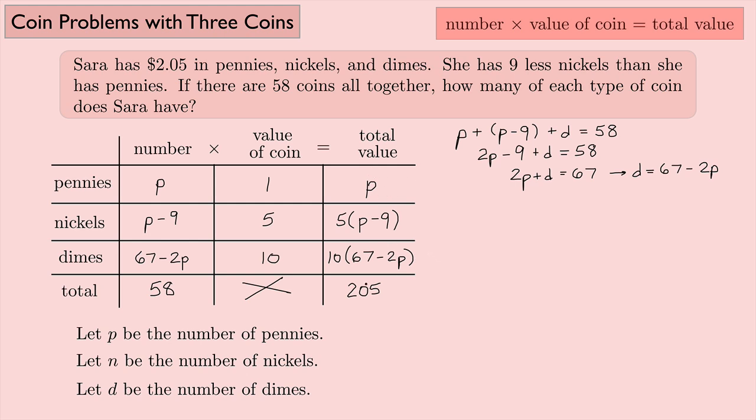Now when you add these three things up, you should get 205. So let's do that. We have P plus 5 times P minus 9 plus 10 times 67 minus 2P. All that added together should give me 205. Now I have to distribute, collect like terms, basically just solve this equation for P.